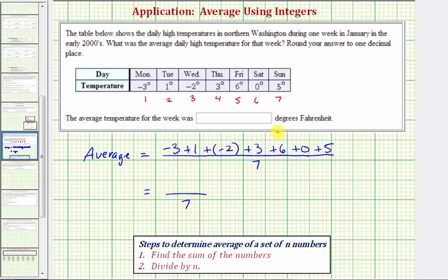So now let's find the sum. We have negative three plus one, that's negative two, plus negative two, that's negative four. Negative four plus three is negative one. Negative one plus six is five. Five plus zero is five. Five plus five is ten.